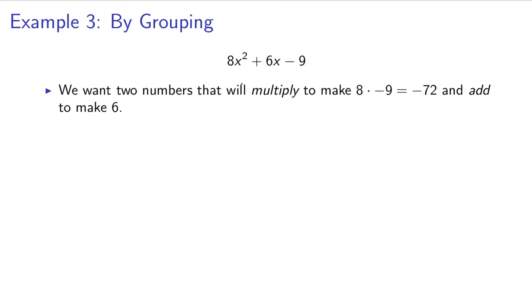When you multiply two numbers, not quotient, I'm bad with terminology, that will multiply to make the same thing that 8 and 9 multiply to make, 72, and add to make this middle term 6.